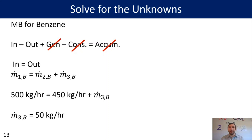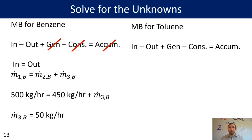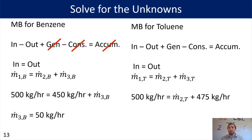Now let's do a toluene material balance. The same simplifications apply — steady state and no reactions — so we again have: in equals out. M1T = M2T + M3T. We have 500 kilograms per hour of toluene coming in, we don't know how much is in the distillate stream, and we know 475 kilograms per hour is in the bottom stream. Rearranging and solving for M2T gives us 25 kilograms per hour of toluene in the distillate stream.